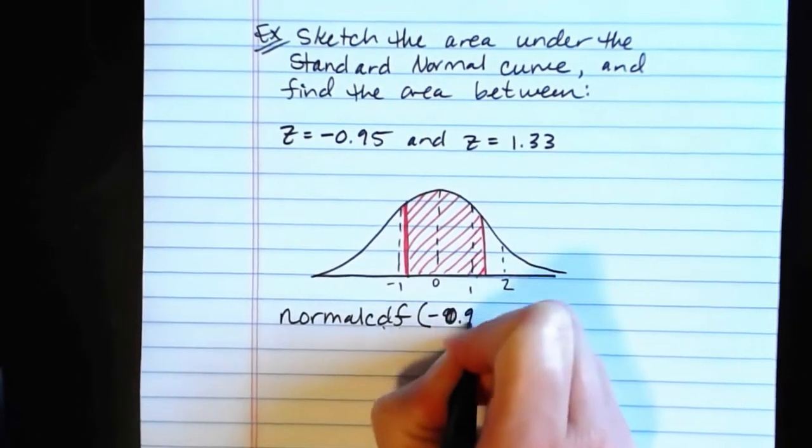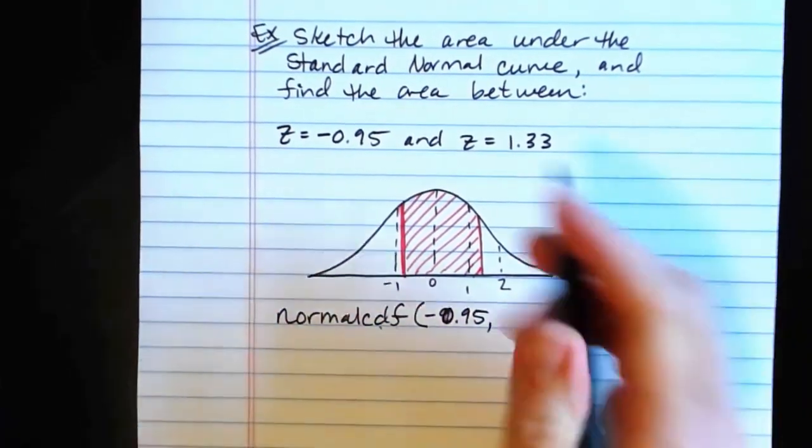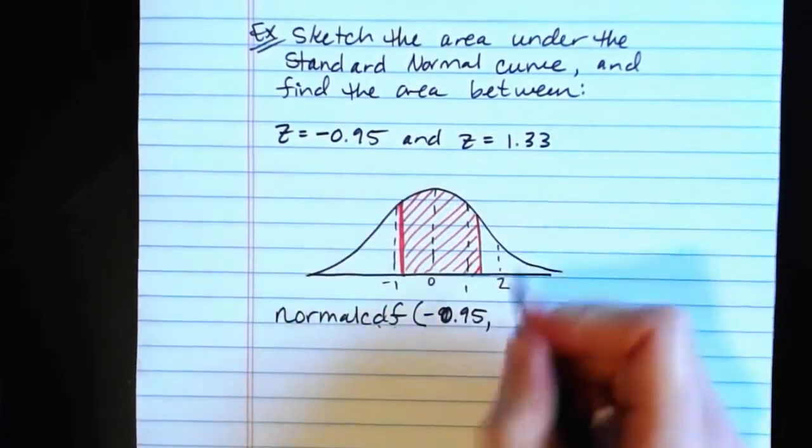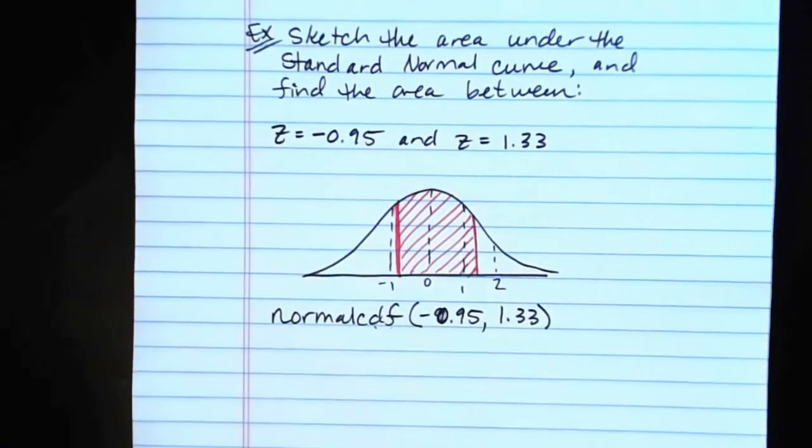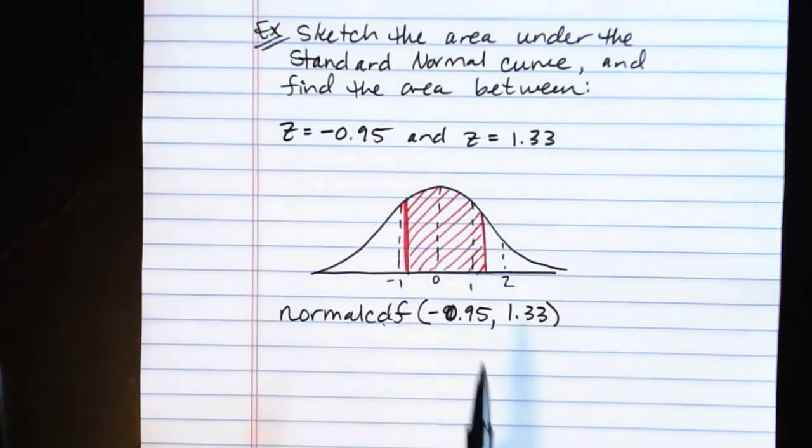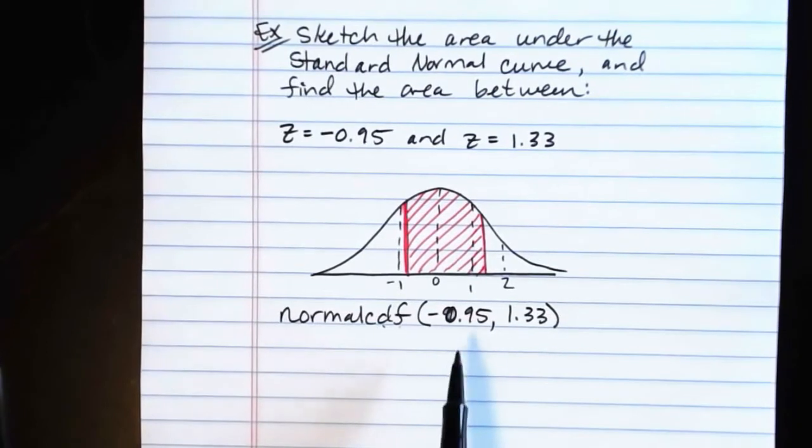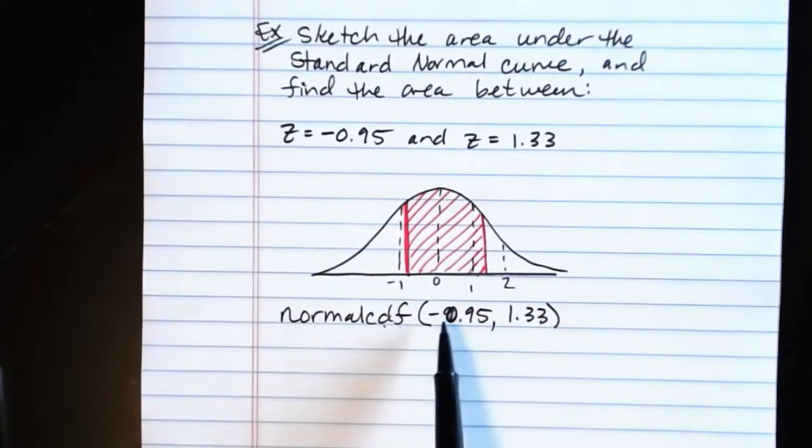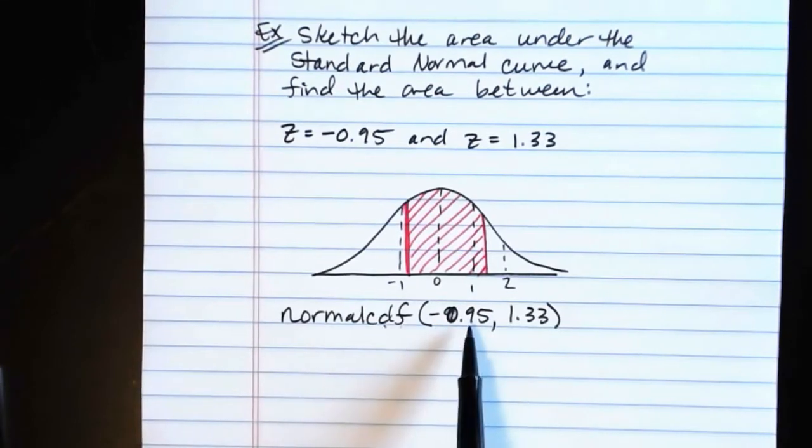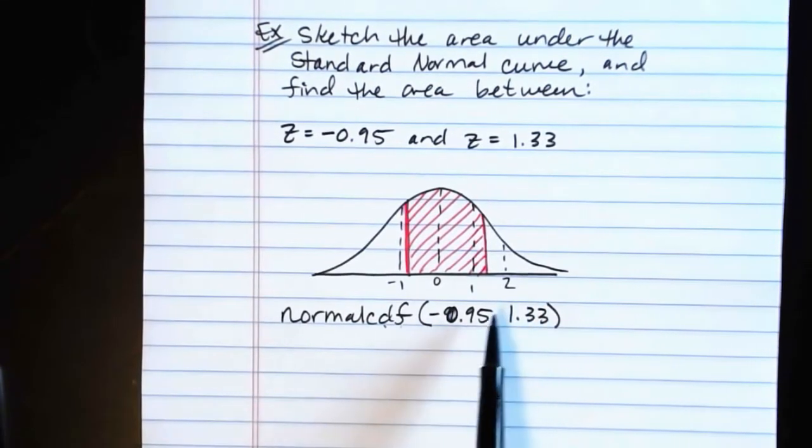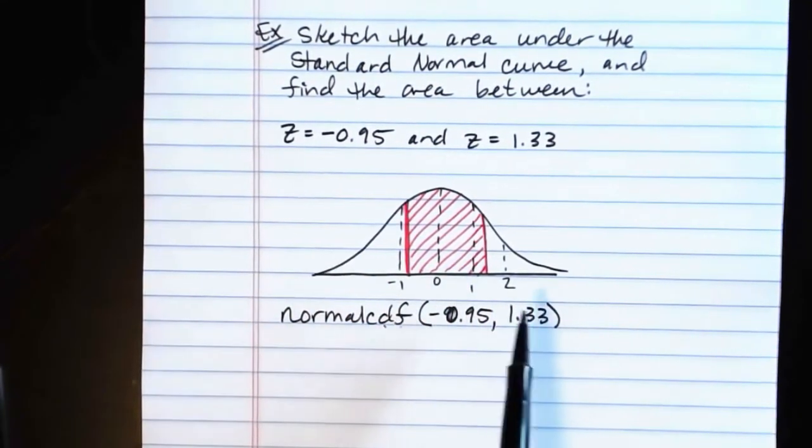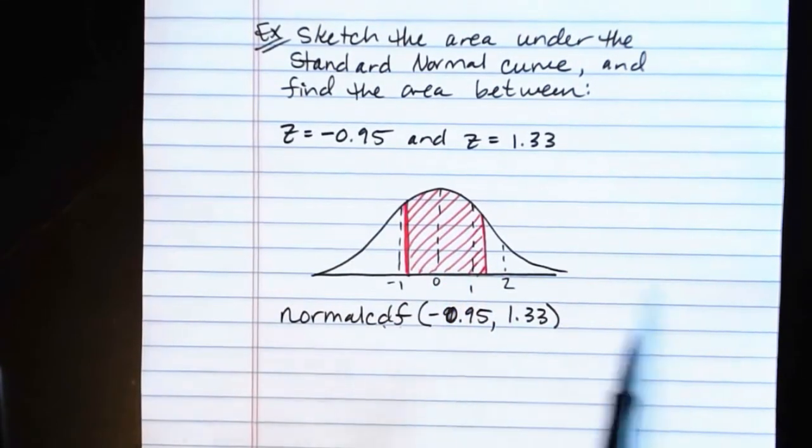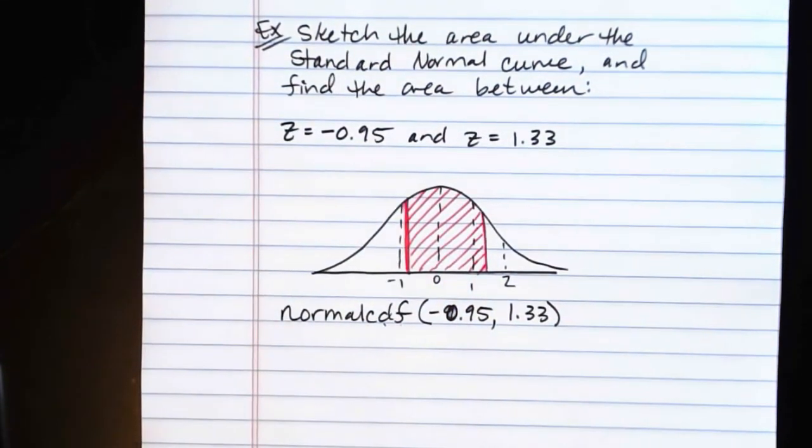It's going to want to know the leftmost boundary value of your interval or the lowest value. So that's negative 0.95. Then it'll want a comma and the upper boundary value, 1.33. If you have the new operating system, you'll get a slightly different screen. It'll ask you for the lower, the upper, the mu, and the sigma. Lower will be negative 0.95. Upper will be 1.33. And then because we're dealing with the standard normal curve, the mu is 0 and the sigma should be set to 1. So that's what it would be like with the new OS.